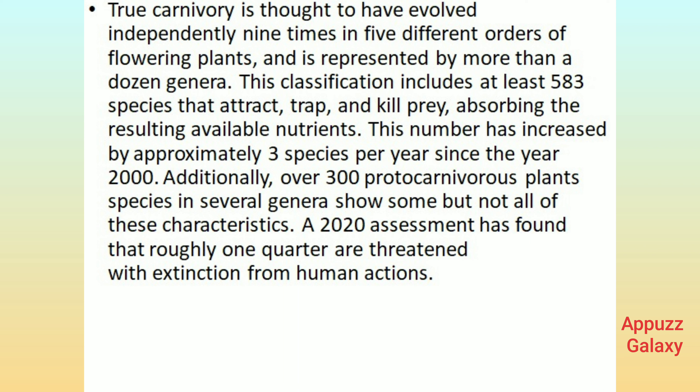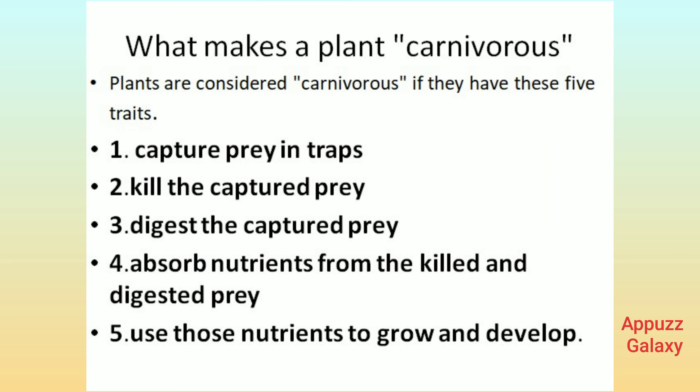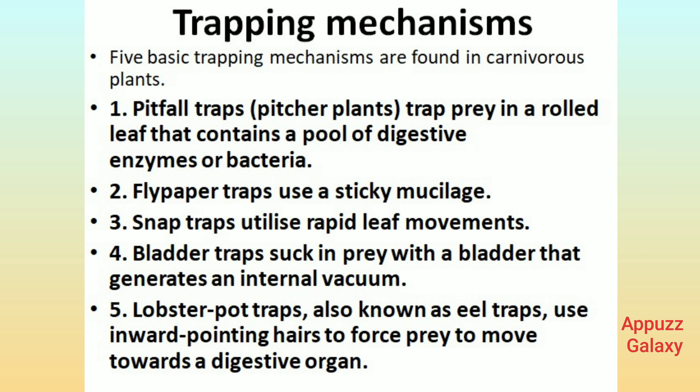A 2020 assessment has found that roughly one quarter are threatened with extinction from human actions. What makes a plant carnivorous? Plants are considered carnivorous if they have these five traits: 1. Capture prey in traps. 2. Kill the captured prey. 3. Digest the captured prey. 4. Absorb nutrients from the killed and digested prey. 5. Use those nutrients to grow and develop.